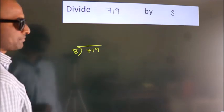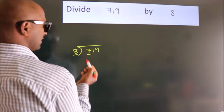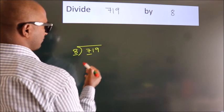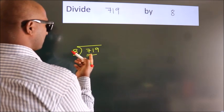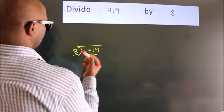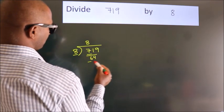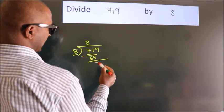Next, here we have 7. Here 8. 7 is smaller than 8, so we should take two numbers: 71. A number close to 71 in the 8 table is 8 times 8, 64. Now we should subtract. We get 7.